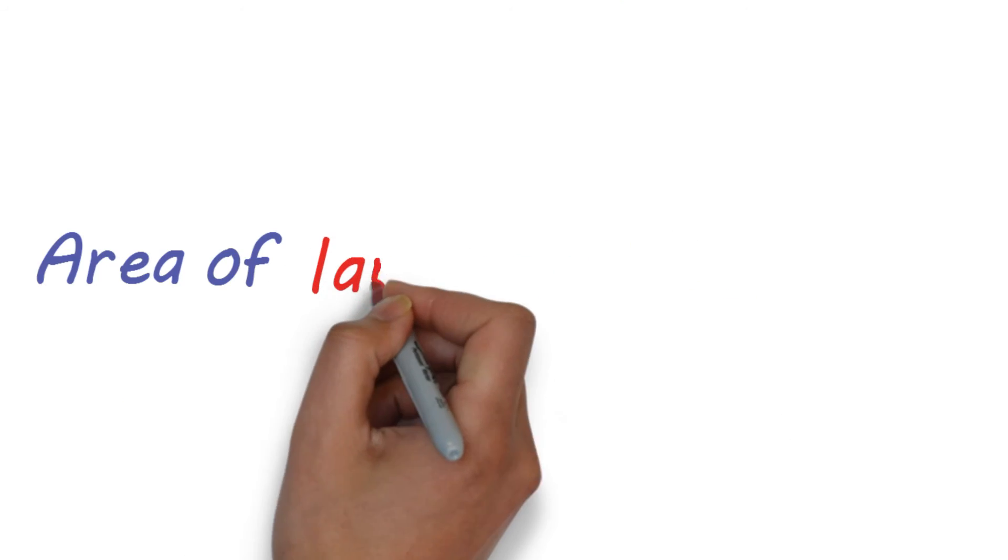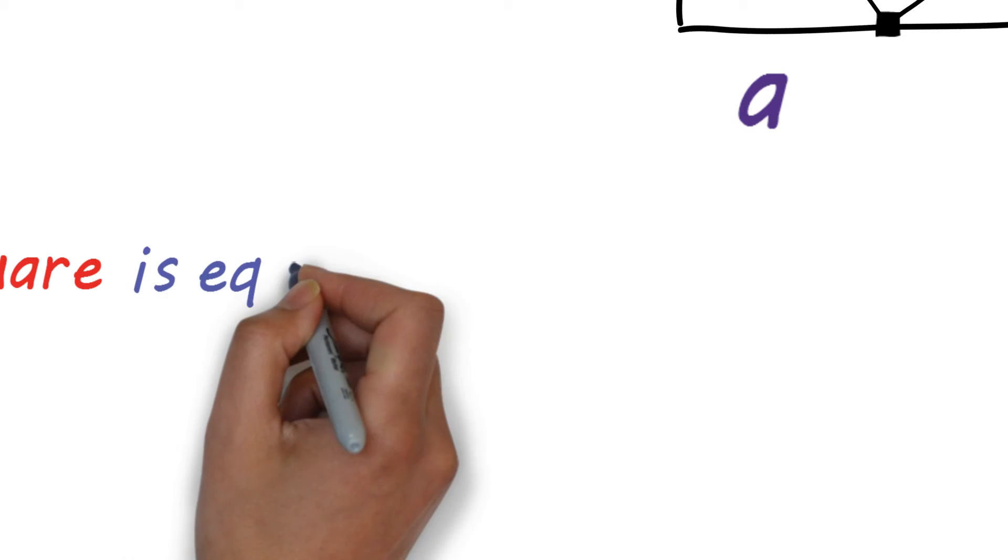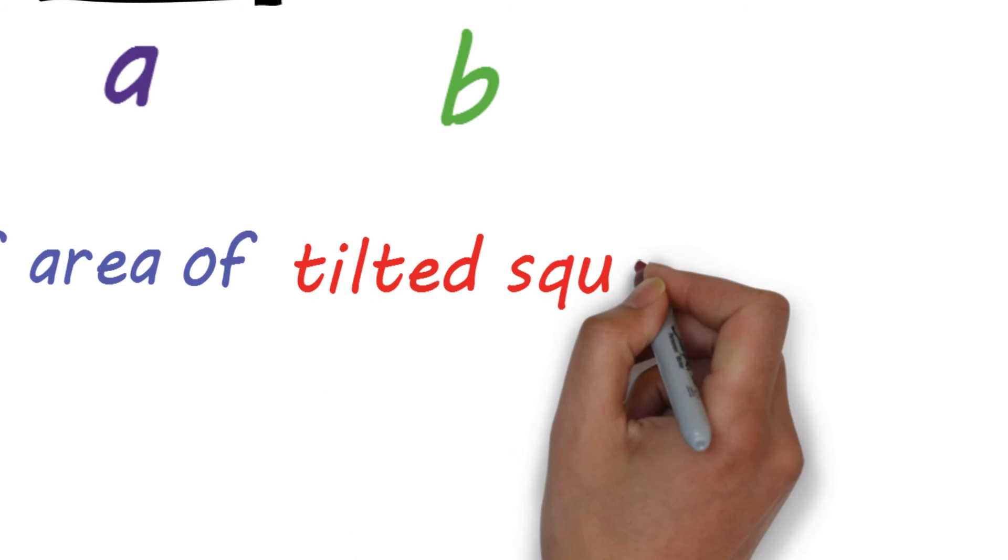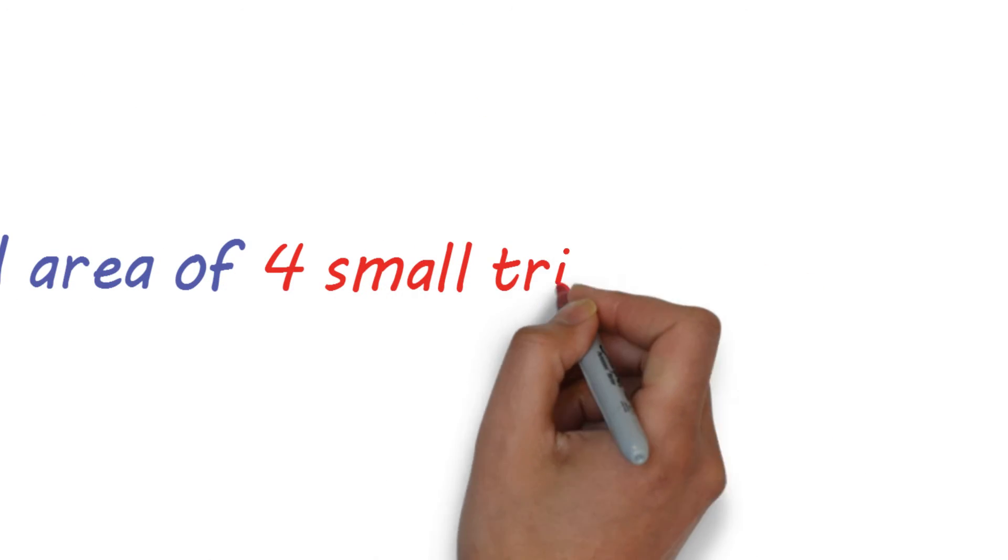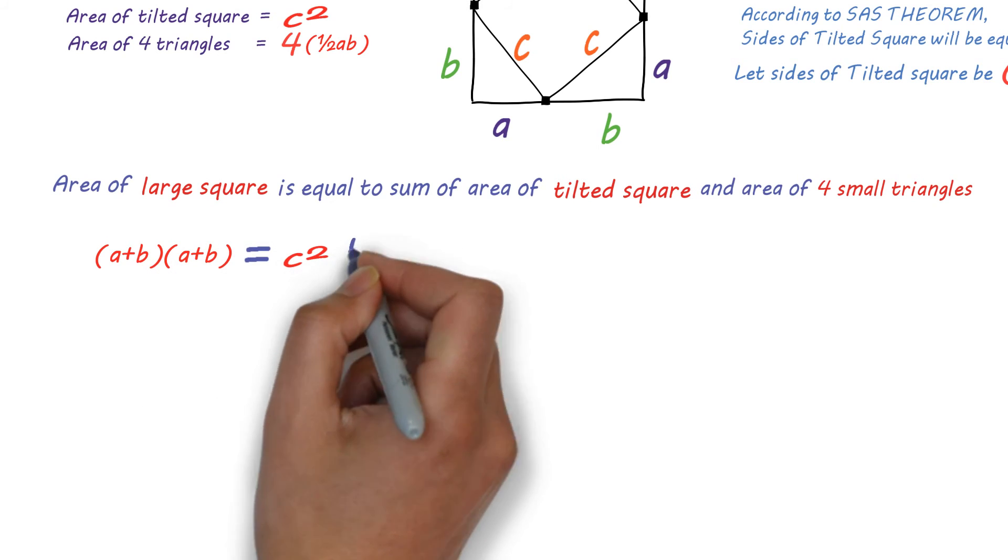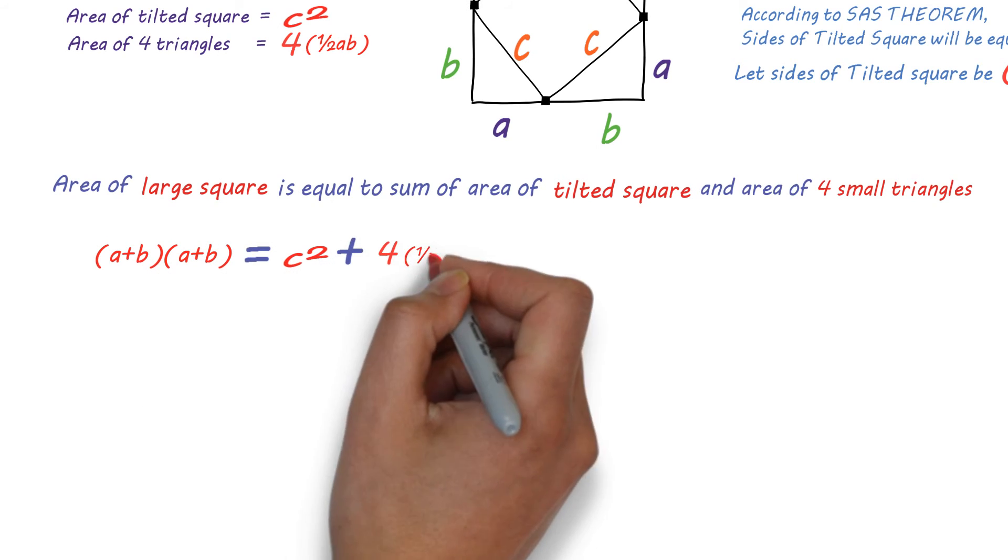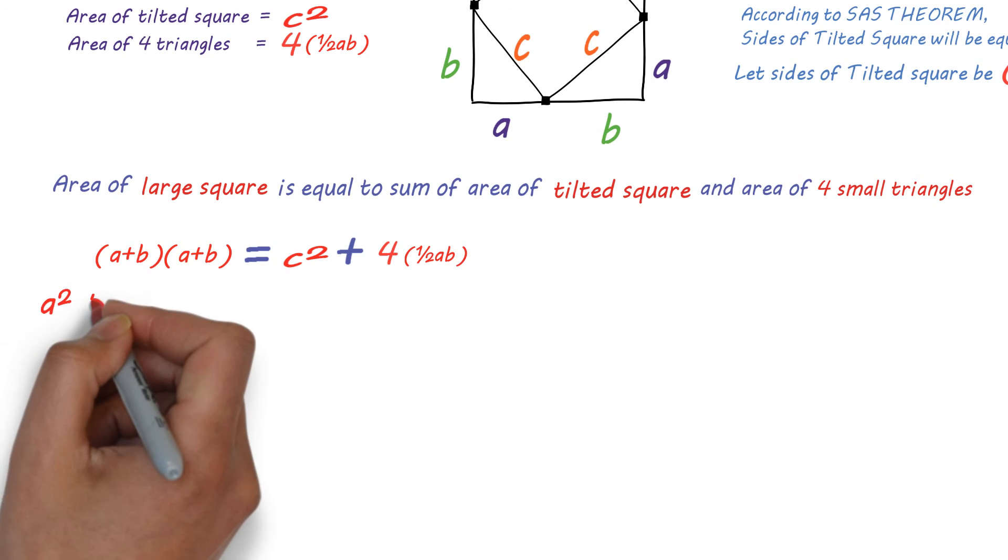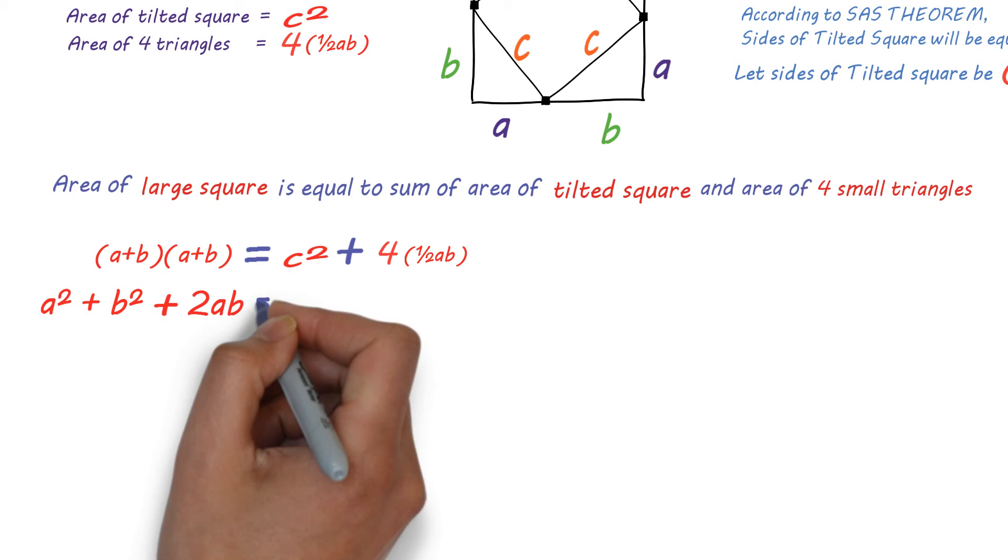Now, you will observe that area of large square is equal to sum of area of tilted square and area of these four triangles. That is, A plus B times A plus B is equal to C squared plus four times half AB. That is A squared plus B squared plus 2AB is equal to C squared plus 2AB.